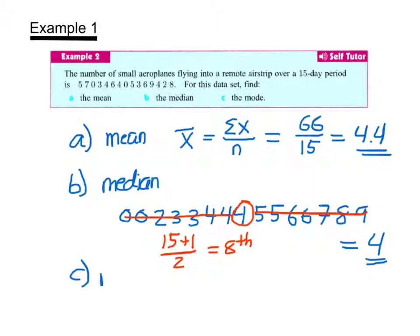The last measure of center, the mode, is quite easy to find once I have an ordered data set. By inspection I can see that I have 3 fours and no other data value occurs 3 times, so the mode is also 4. We can see that all 3 measures of center are relatively close to each other, which could mean this data set is symmetric, but we'd have to graph to make sure.